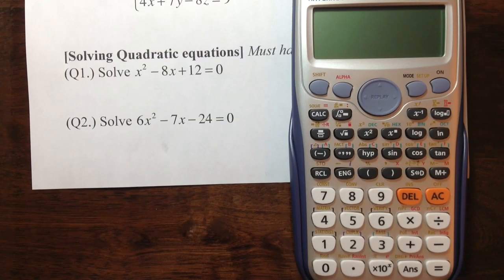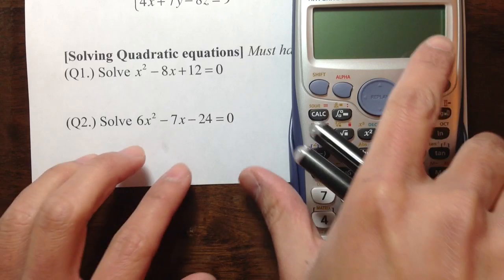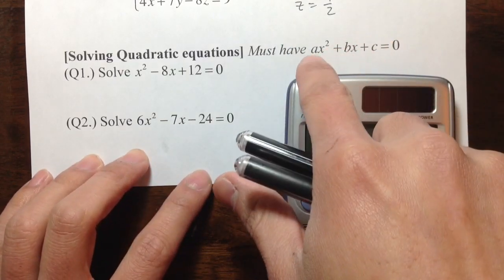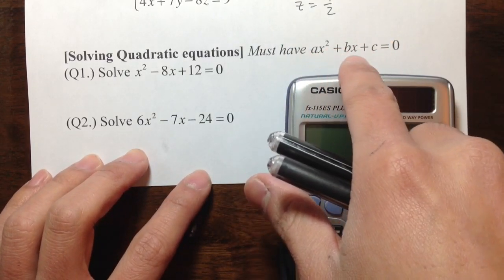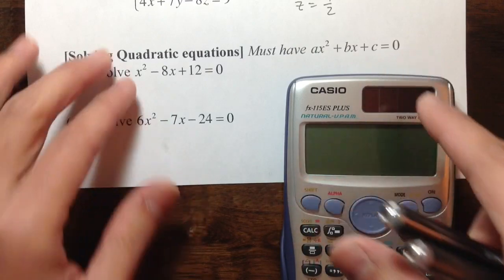Similar to the previous video, in this case we're going to do some quadratic equations. We must have the quadratic equation in standard form: ax² + bx + c = 0.